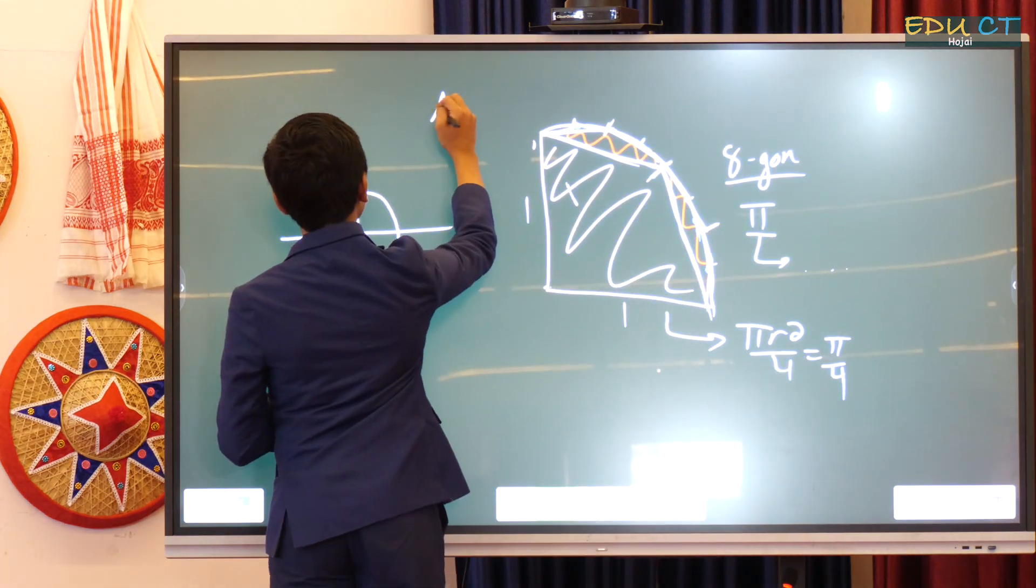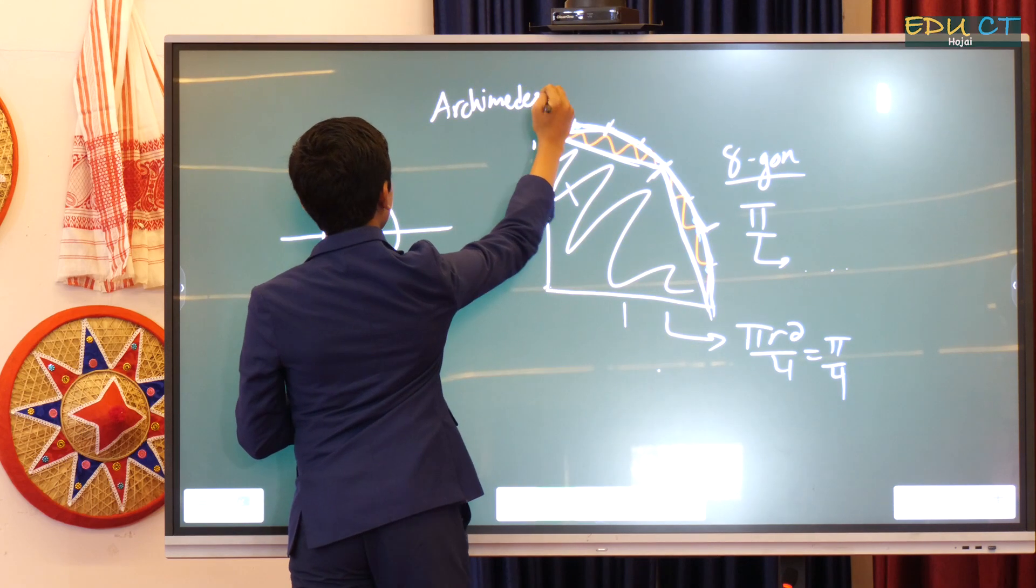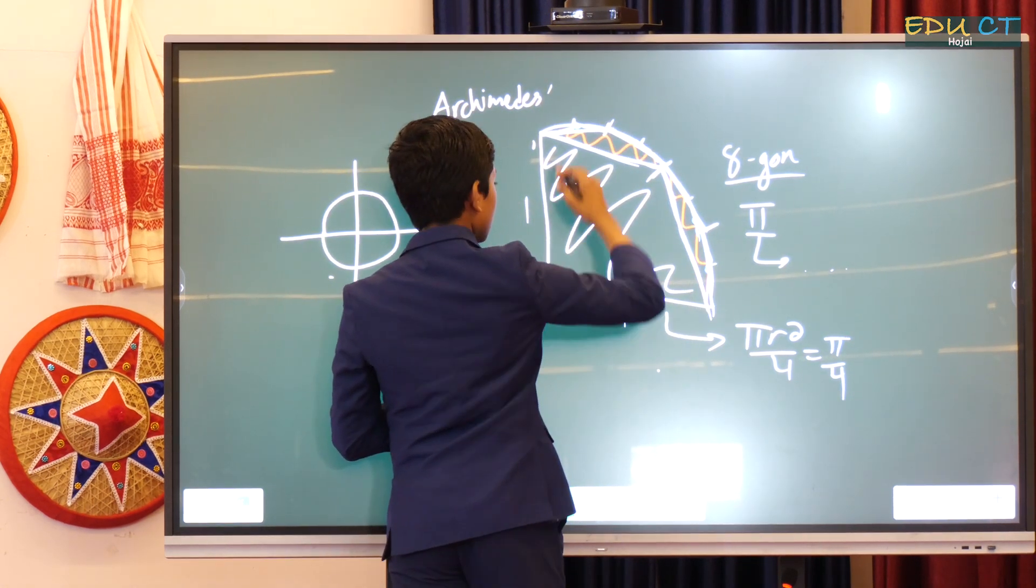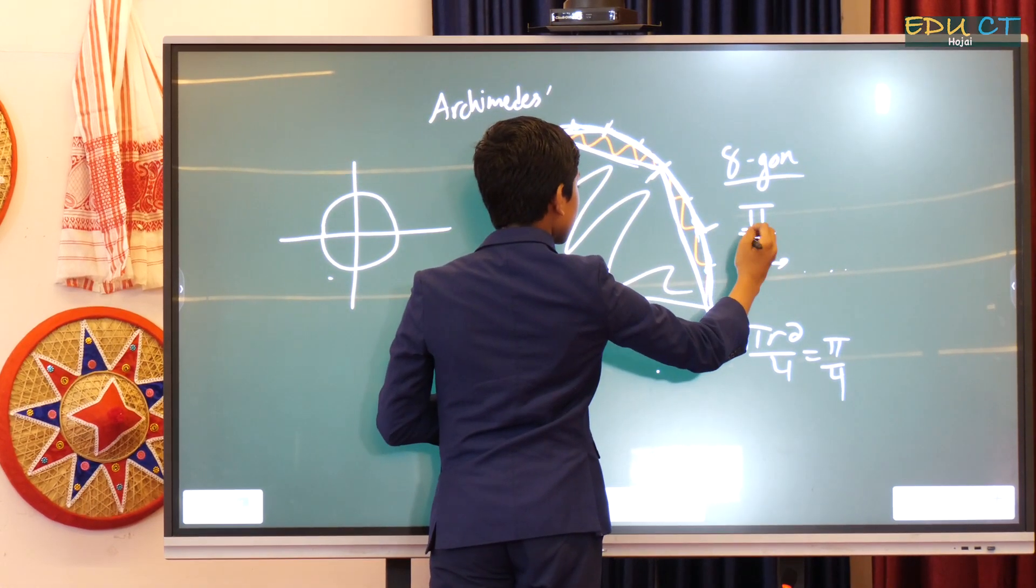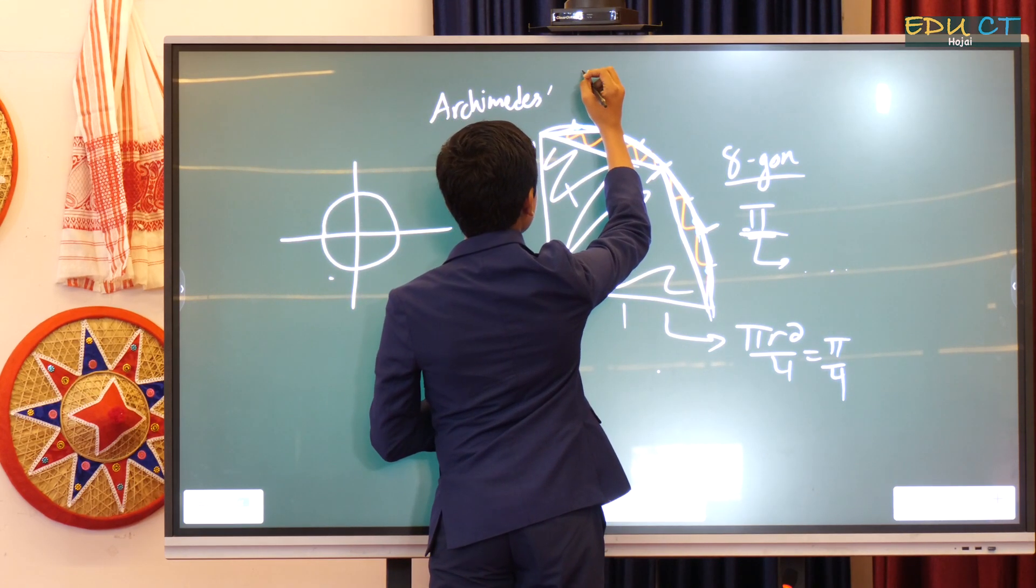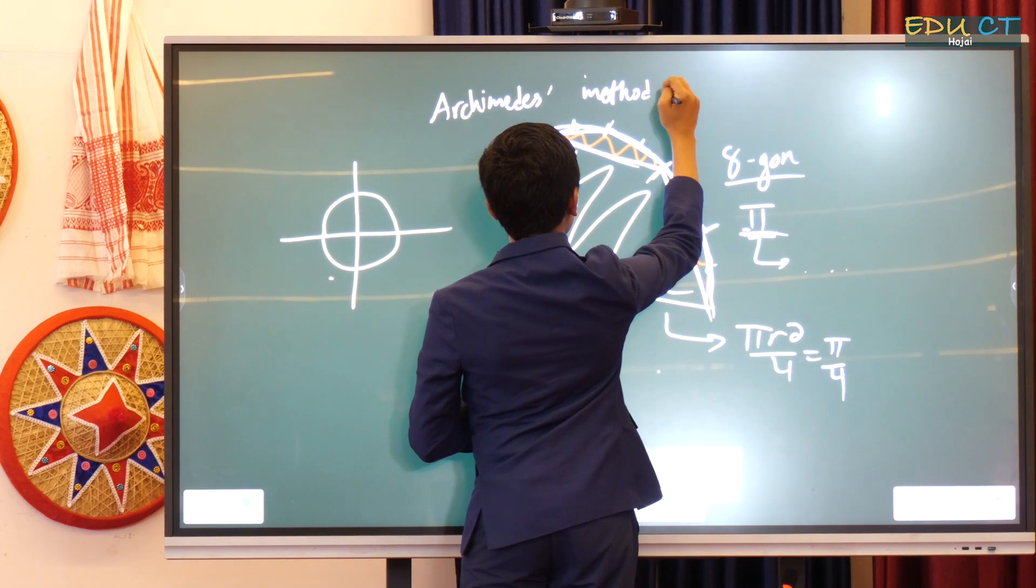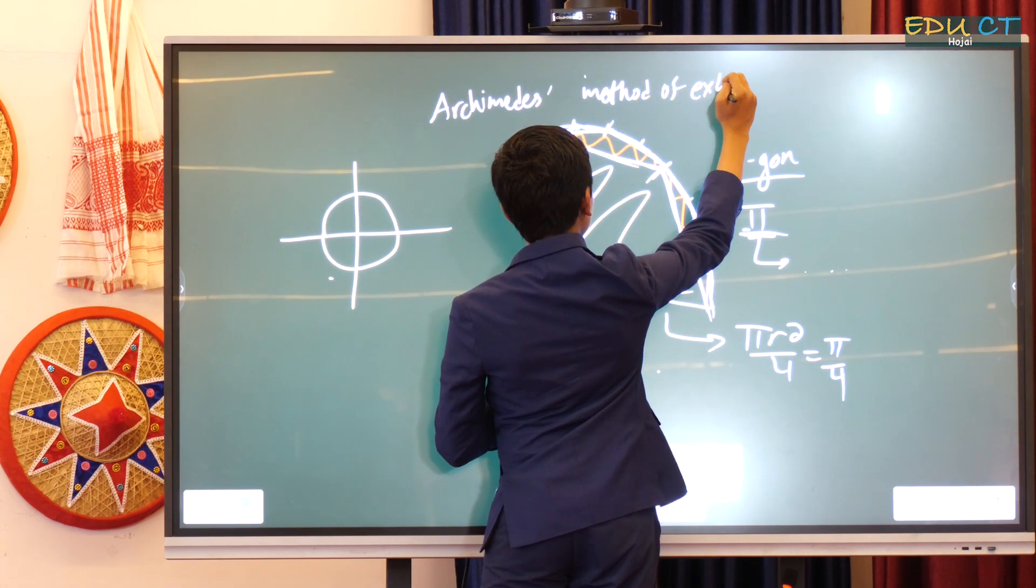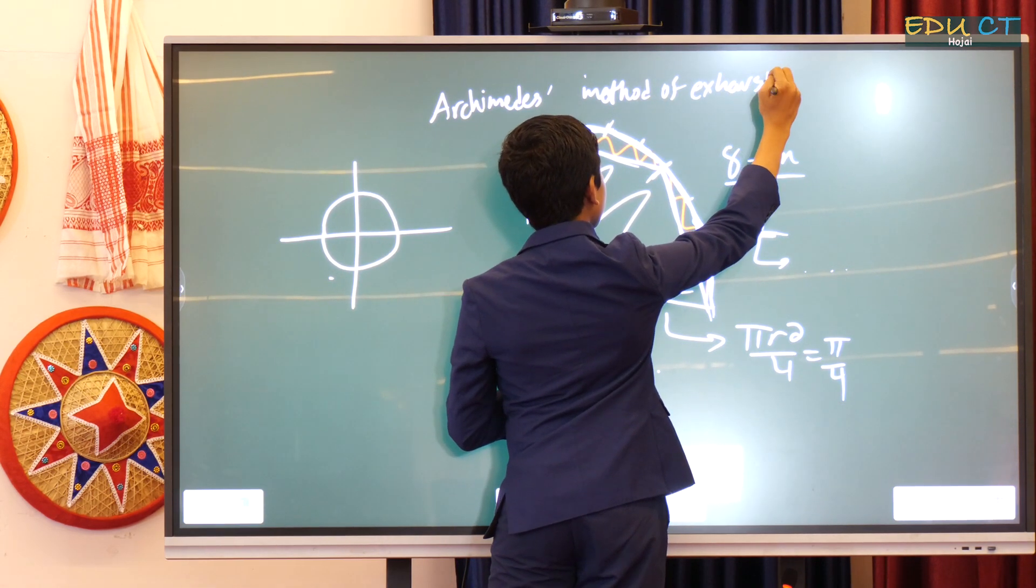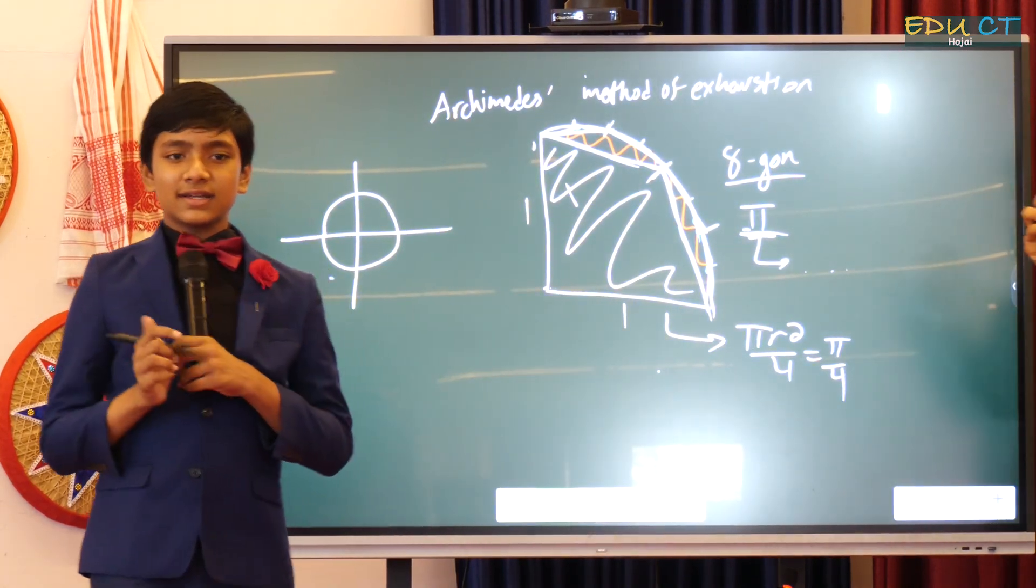So in short, just use Archimedes' method of exhaustion, and it will become clear why a circle's area of pi has no end, why it can't be expressed as a rational number. Okay. Sorry for taking so much time to come up with that answer, but I hope that answers your question. Thank you.